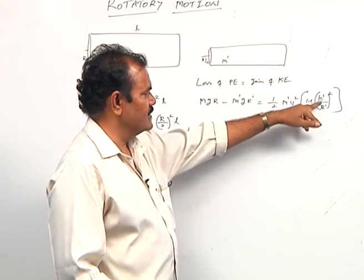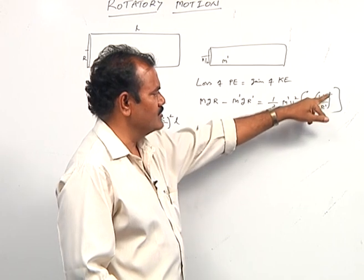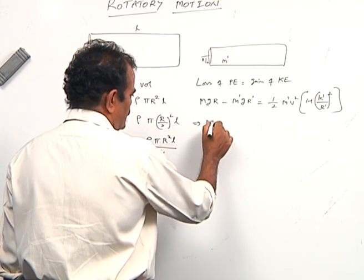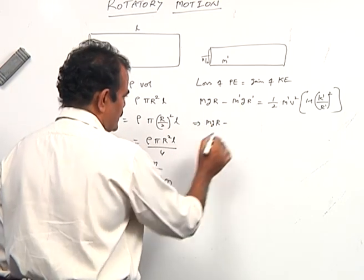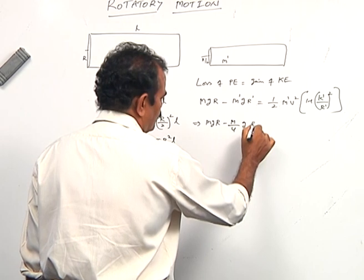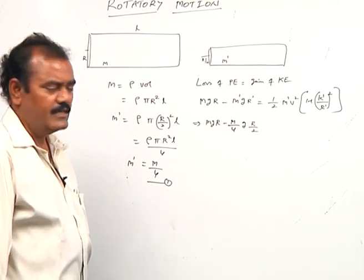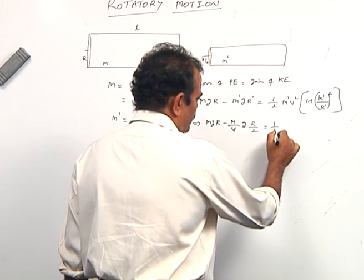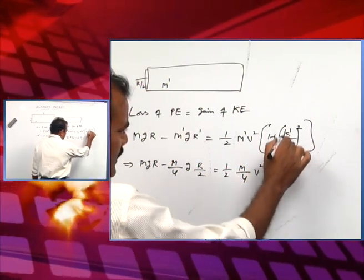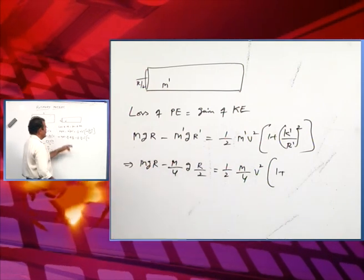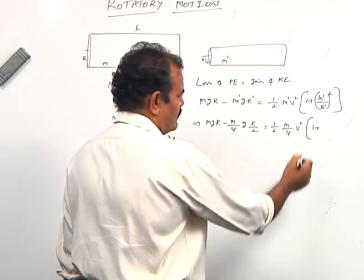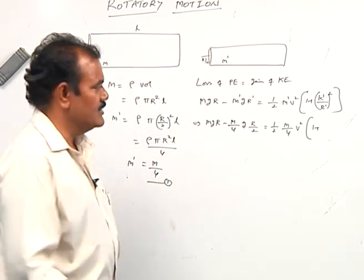The radius is changing, so we take k' by r' whole square accordingly. Here m' equals m/4 and r' equals r/2. The gain of KE is (1/2) m' v² times (1 + k'²/r'²). Since it is a solid cylinder, k²/r² is just like that of a solid disc, giving k'²/r'² = 1/2.